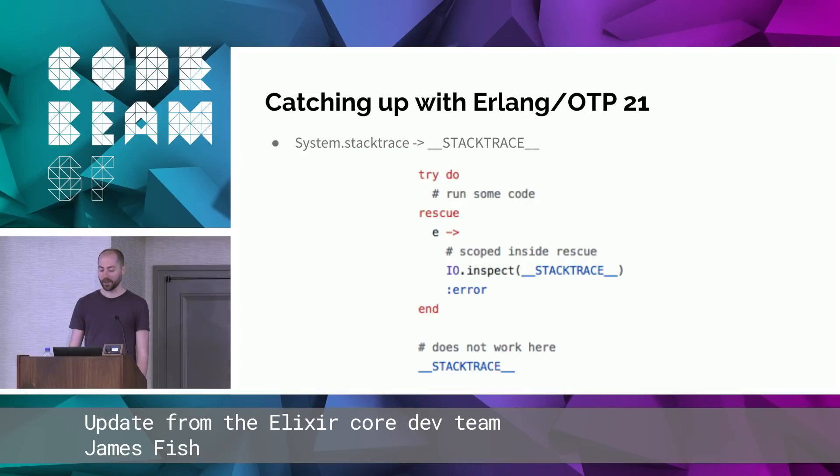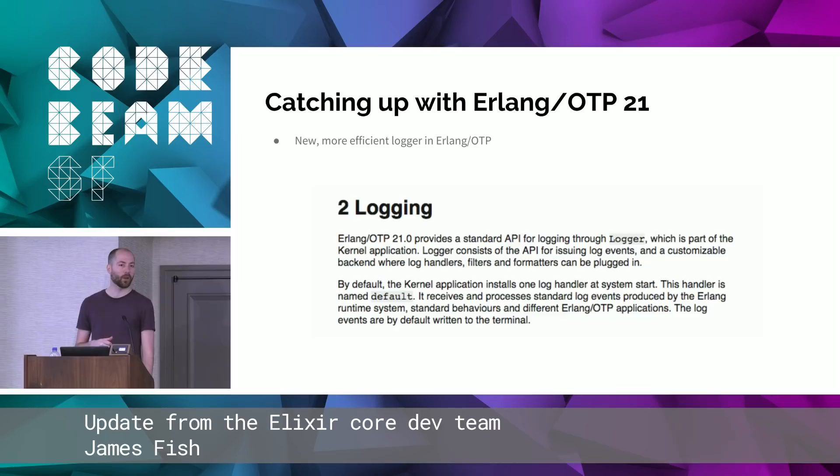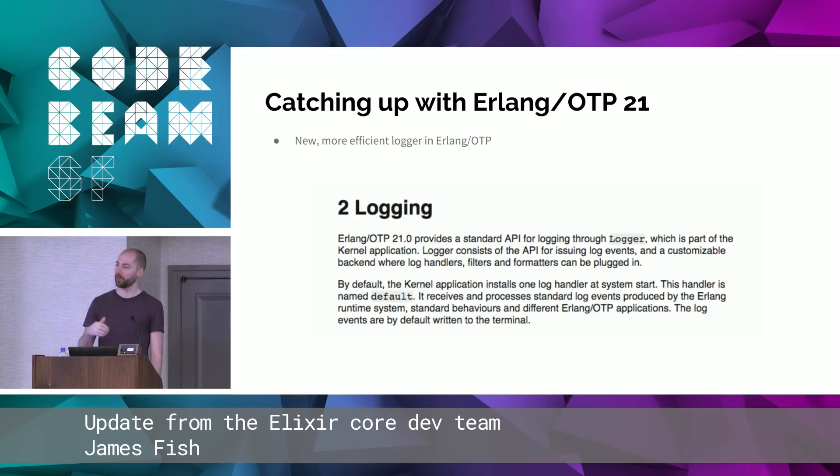OTP 21 introduced a new, more efficient logger, and Elixir integrates with it. Previously, Erlang's error logger was via a gen_event process. Now a lot of the logging is handled in the calling process to reduce the bottleneck, and you can choose exactly how you want to log.